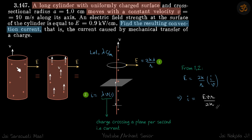That is how much if you just take a plane somewhere, how much charge is crossing that plane per second, that is the convection mechanical current.